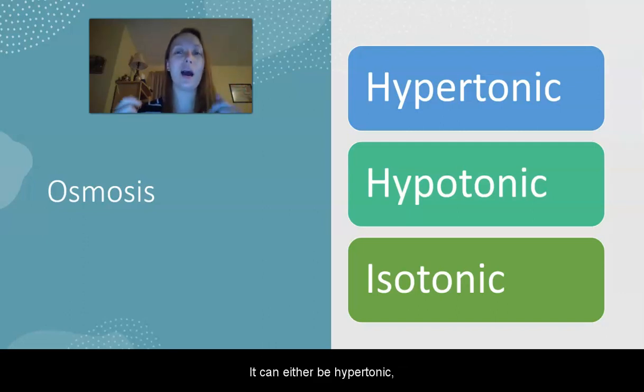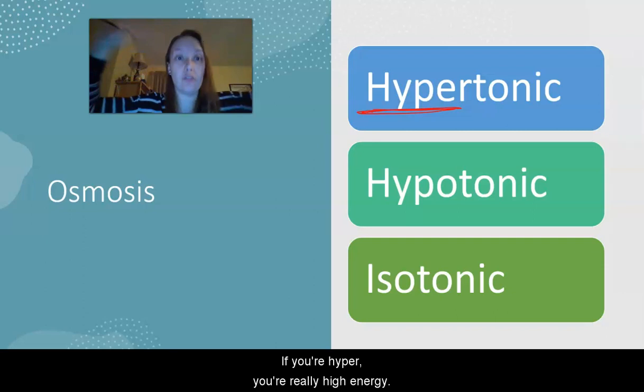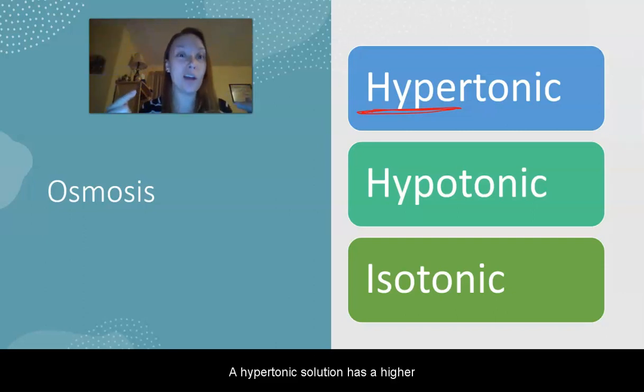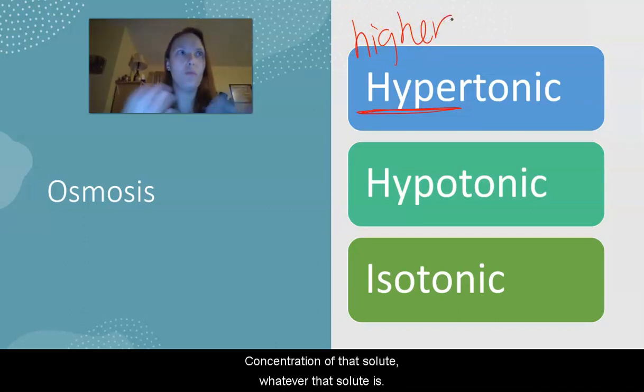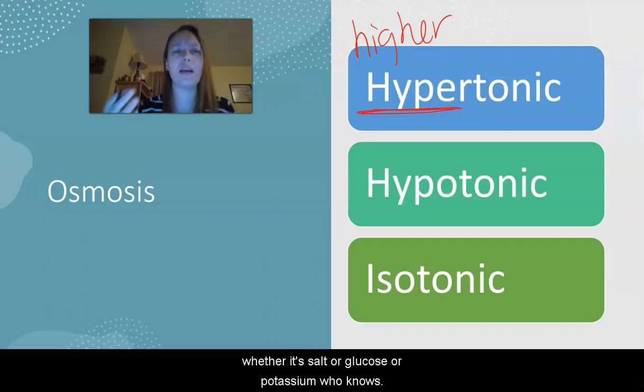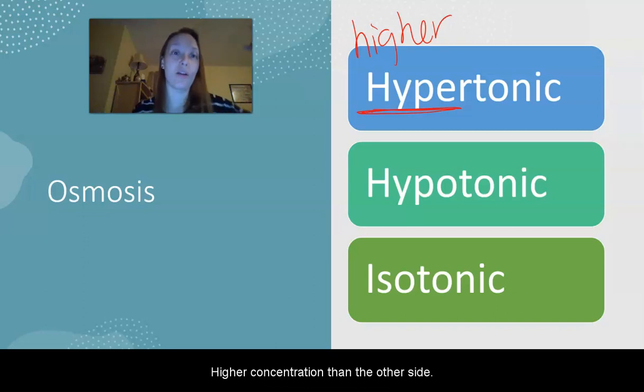It can either be hypertonic, hypotonic, or isotonic. So a hypertonic solution, if you're hyper, you're really high energy. So a hypertonic solution means it has a higher concentration of that solute, whatever that solute is, whether it's salt or glucose or potassium. It means that it has a higher concentration than the other side.